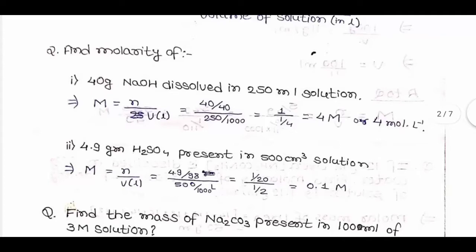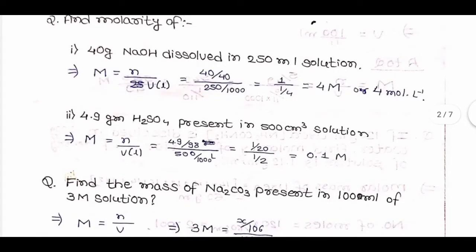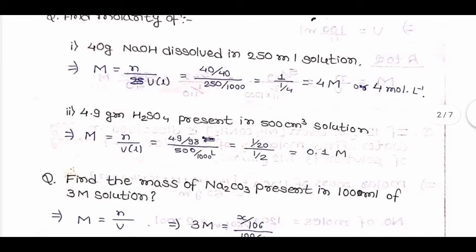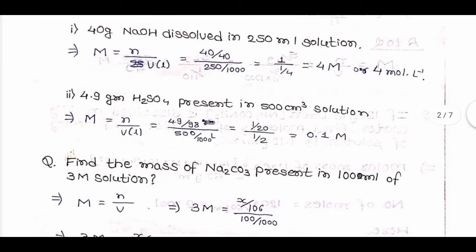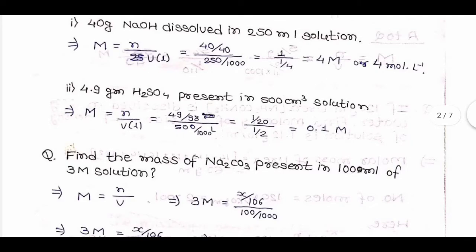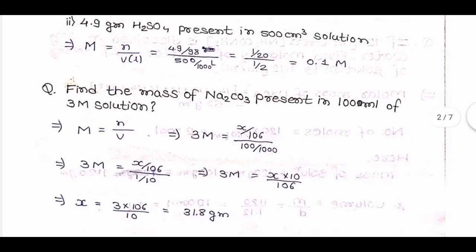Next question: 4.9 grams of H2SO4 present in 500 cm³ solution. Number of moles of H2SO4 = 4.9/98. Volume = 500/1000 = 1/2 liter. Therefore molarity = (1/20) / (1/2) = 0.1 mol/liter.